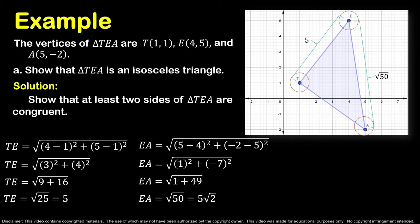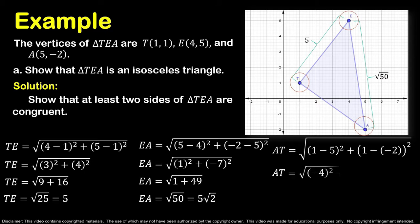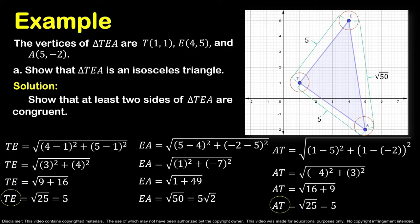To solve for the length of side AT, we have AT equal to the square root of (1 minus 5)² plus (1 minus 2)². Subtracting: 1 minus 5 is −4, and 1 minus 2 is −1. We now have the square root of (−4)² plus (−1)². Wait — −4 squared is 16 and 3 squared is 9; 16 plus 9 is 25. The square root of 25 is 5, so the length of side AT is 5 units. Since sides TE and AT are congruent, triangle TEA is an isosceles triangle.